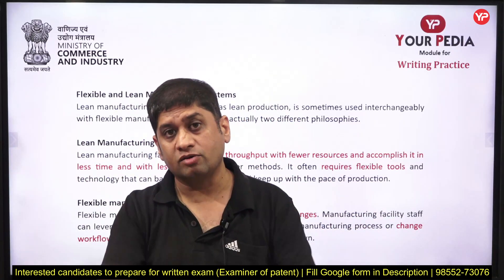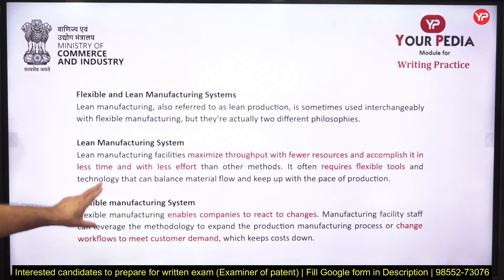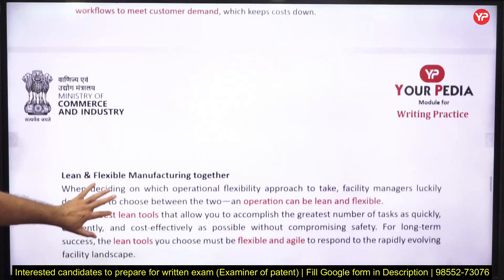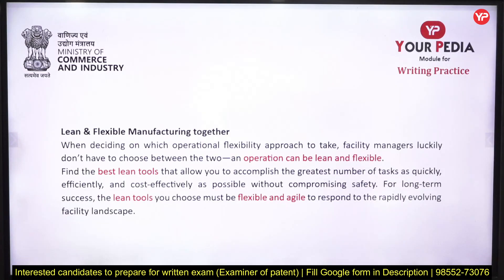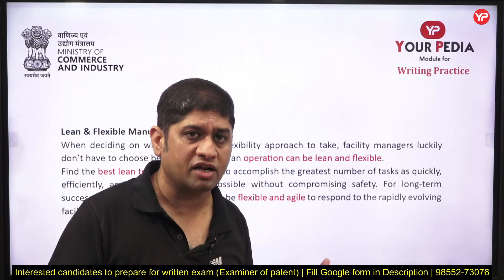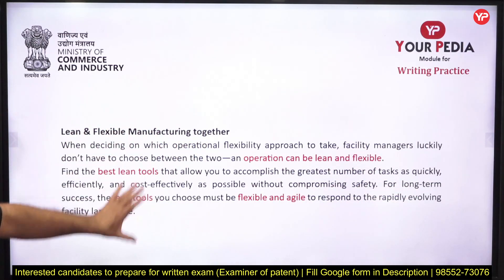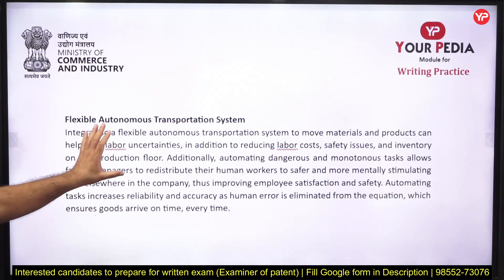If a new exam like Controller General comes up with a different syllabus, if my teachers are flexible, they can go for another domain and teach another subject. So lean means reduce and utilize resources only as much as needed; flexible means you can do multitasking and work across different domains. Lean and flexible manufacturing go hand in hand — lean tools should also be flexible and agile. A small, all-rounder team is how it should work.